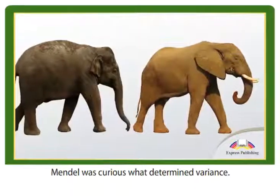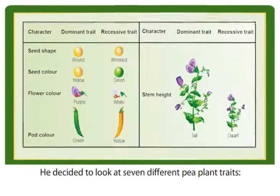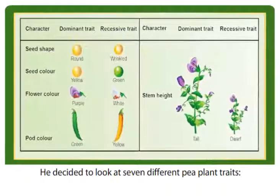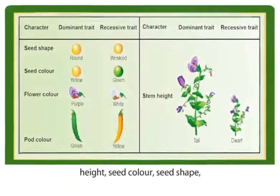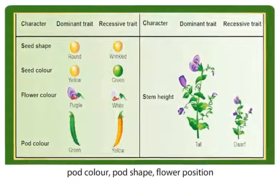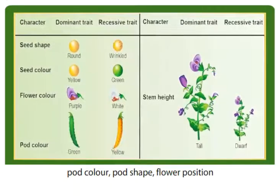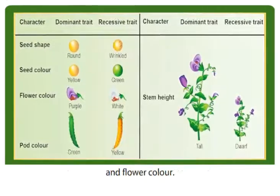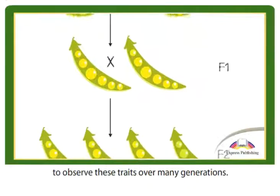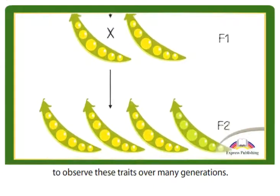Mendel was curious what determined variance. He decided to look at seven different pea plant traits: height, seed color, seed shape, pod color, pod shape, flower position, and flower color. He used selective breeding to observe these traits over many generations.